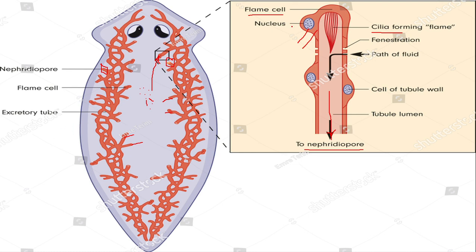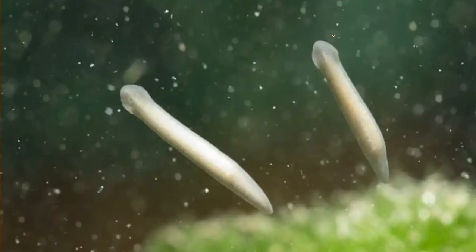One thing you need to know about flame cells is why they are called flame cells. They are called flame cells because the beating of the cilia resembles a flickering flame — therefore these cells are termed flame cells.